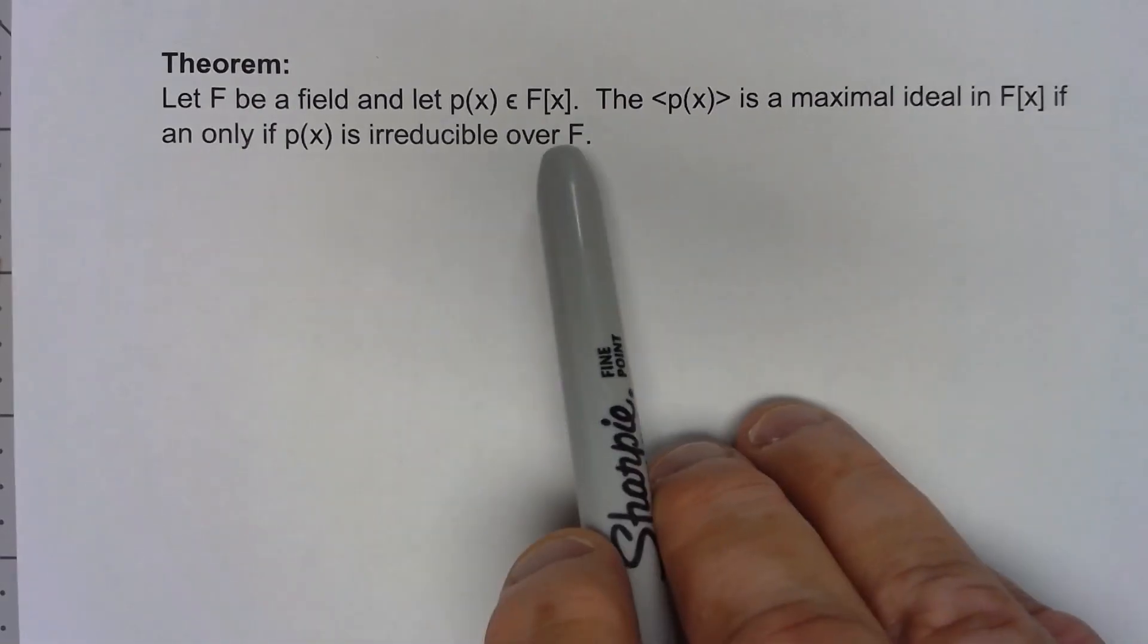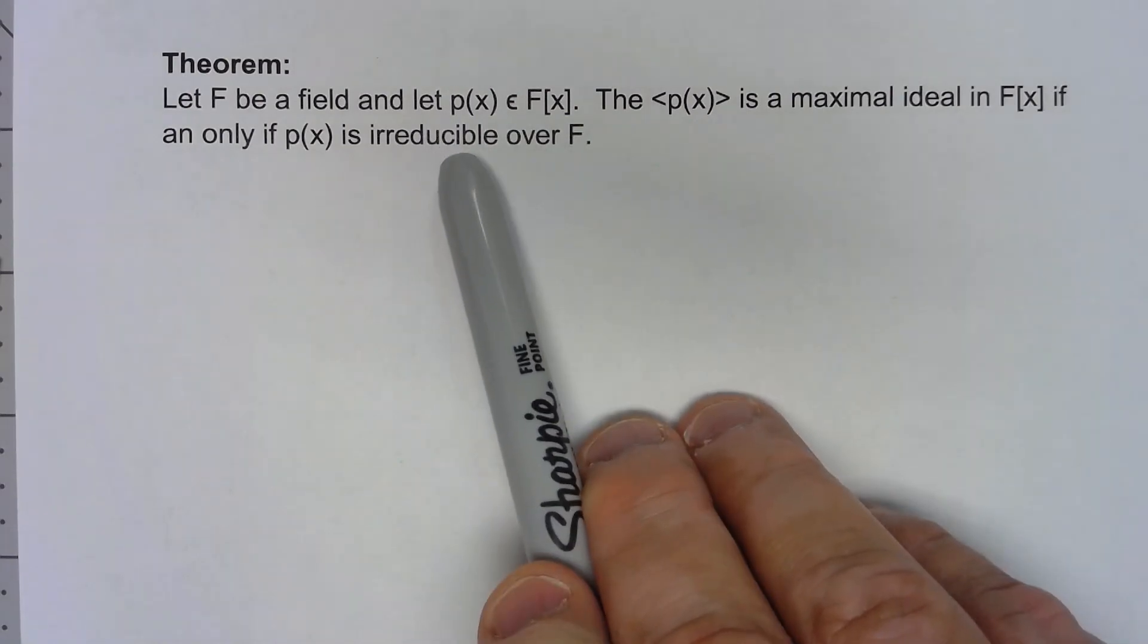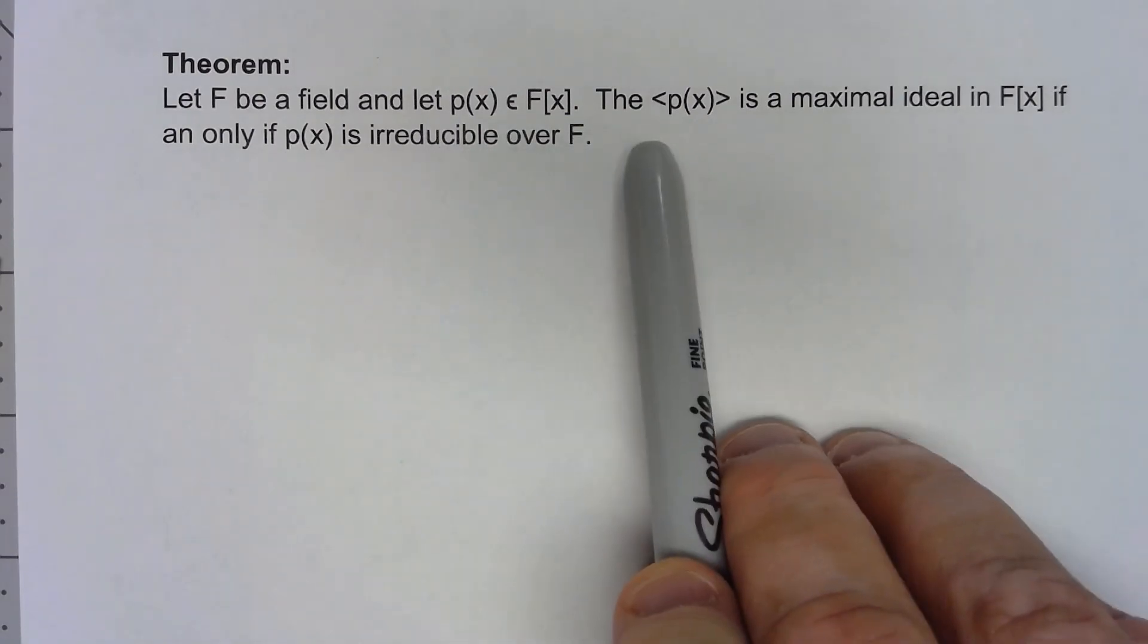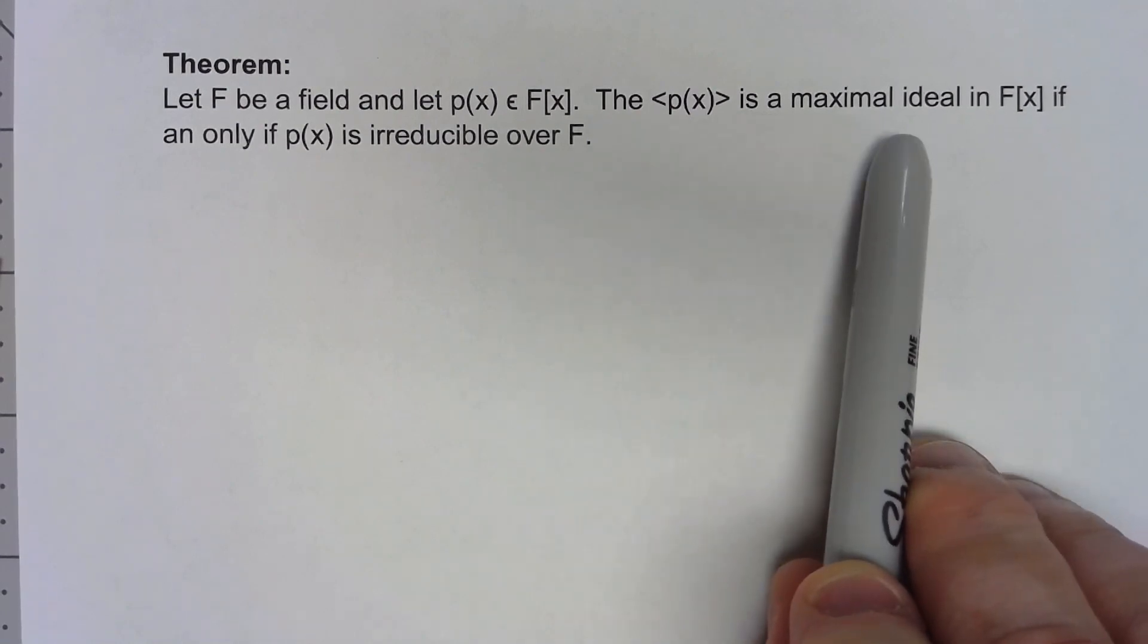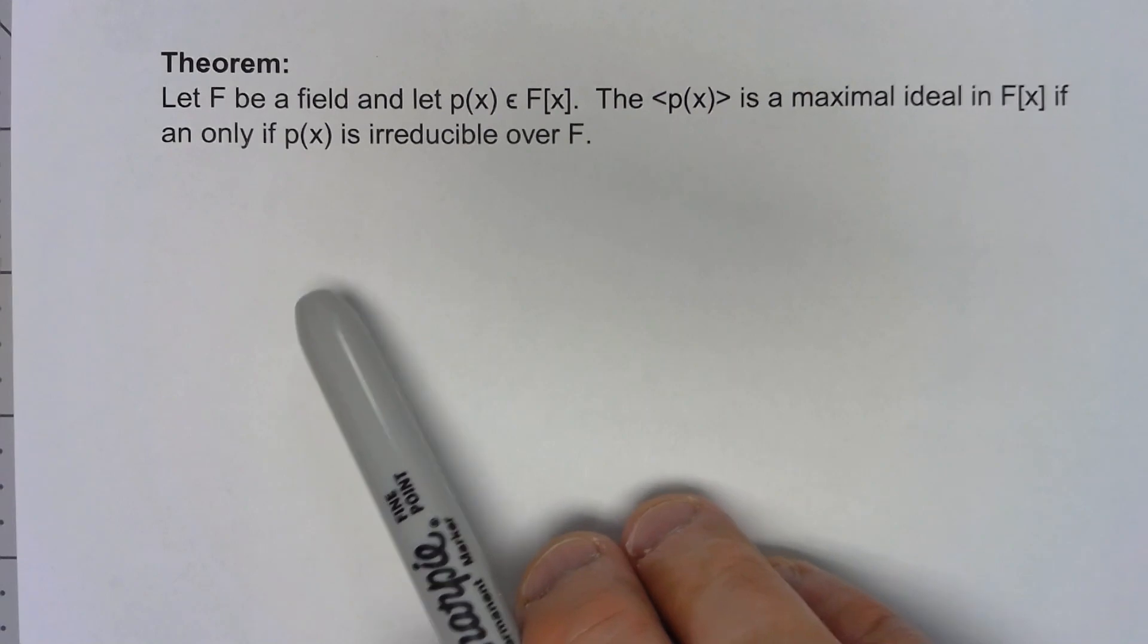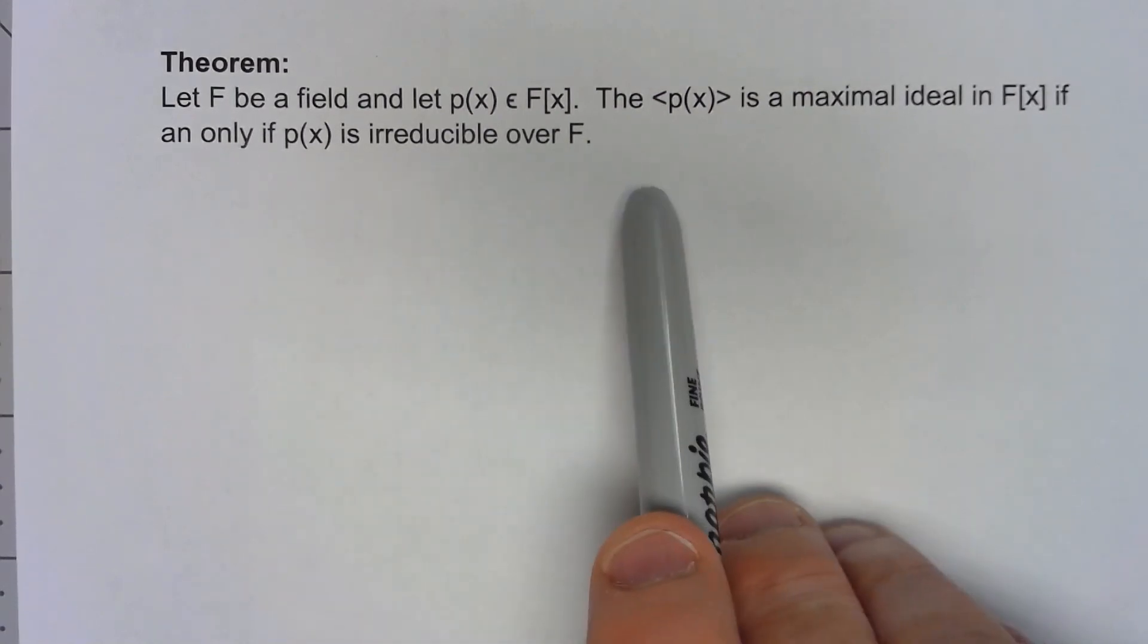Suppose we have a field and create the polynomial ring for it, then we're going to take a polynomial in there. The ideal generated by that polynomial is a maximal ideal if and only if that polynomial is irreducible over F.